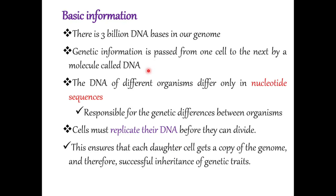Let me talk about some basic information about DNA replication. DNA is a genetic material; it is a double-stranded structure. In that DNA, there are what we call nitrogenous bases, sugar, and pentose. The nitrogenous bases found in DNA are adenine, guanine, cytosine, and thymine. DNA is a genetic material — it carries information that passes from one parent to the next, from one generation to the next.